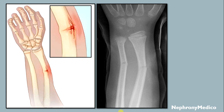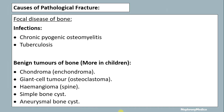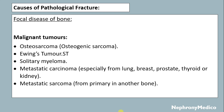This picture shows a pathological fracture. Causes of pathological fracture may be due to focal disease of the bone, which includes infections like chronic pyogenic osteomyelitis and tuberculosis, or benign tumors of the bone like chondroma, giant cell tumor, hemangioma, simple bone cyst and aneurysmal bone cyst, or malignant tumors like osteosarcoma, Ewing's tumor, solitary myeloma, metastatic carcinoma and metastatic sarcoma.